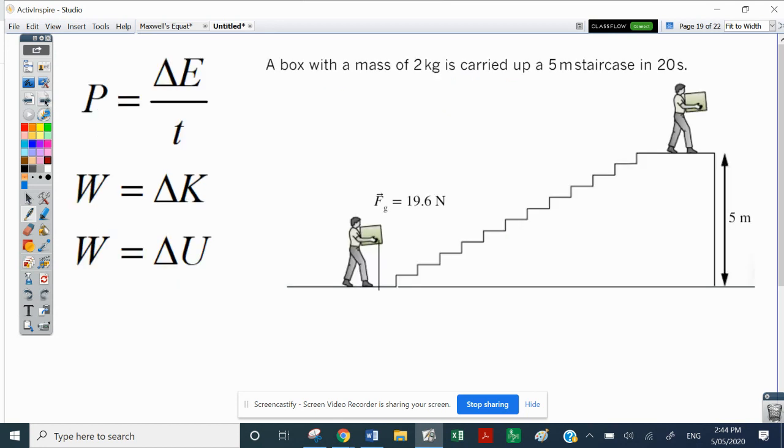Okay, moving on. So remembering, going to be using these three formulas here, that power is the change of energy, the amount of energy that has been transferred or transformed, divided by time, how long it takes to do that. And the work, that's delta E, is work. Work can either be the change of kinetic energy, or work can be the change of gravitational potential energy. So here is an example from the textbook.